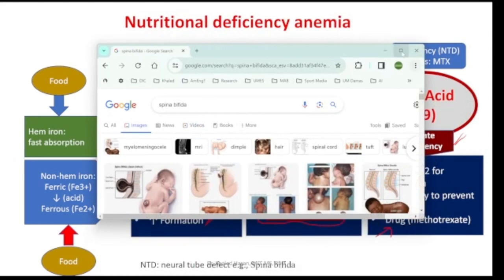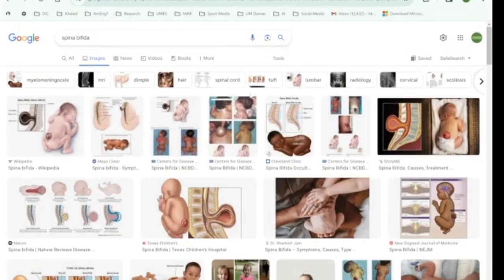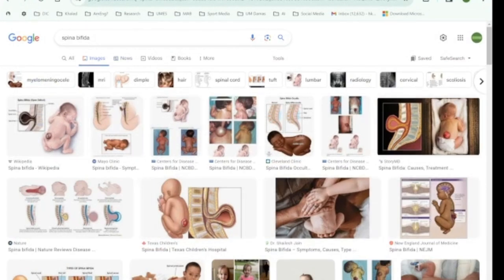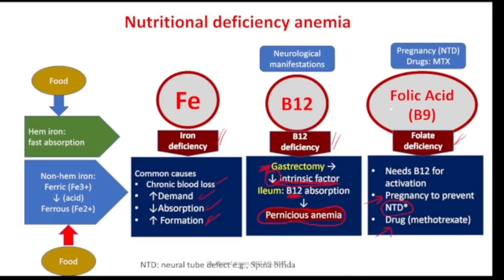Here we have some images of neural tube defects — spina bifida in a baby born to a mother with folic acid deficiency. The human body gets iron from food, from either heme or non-heme products.